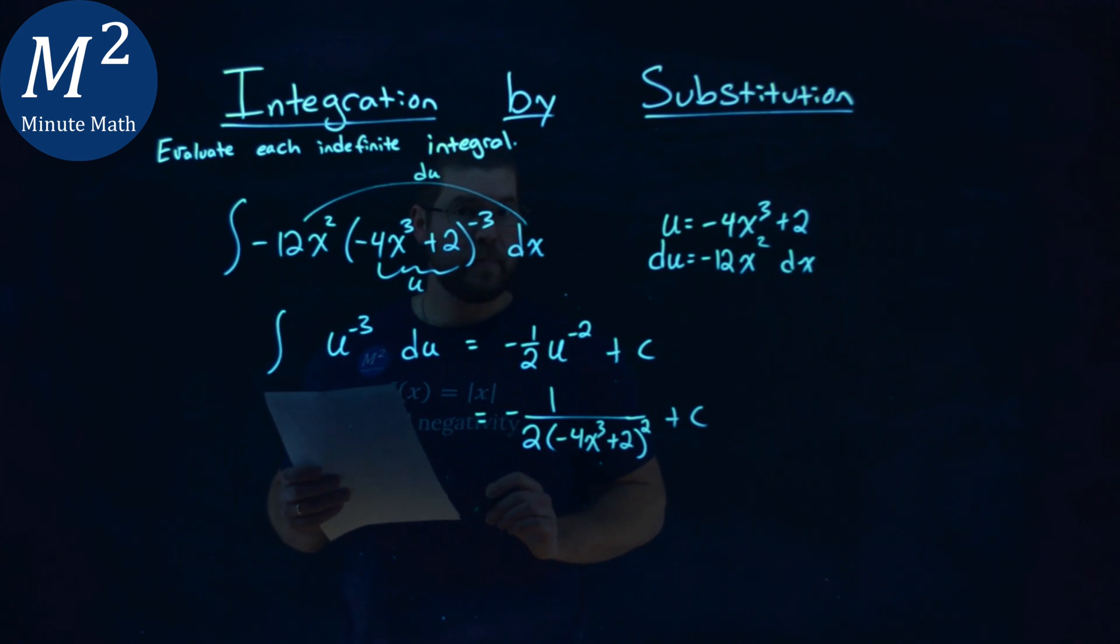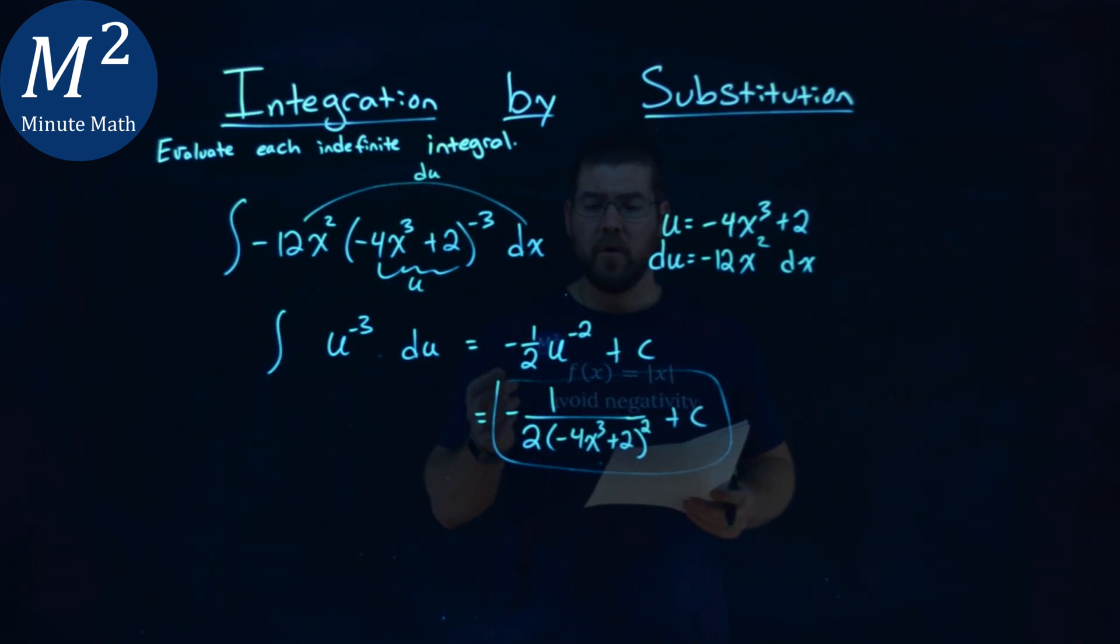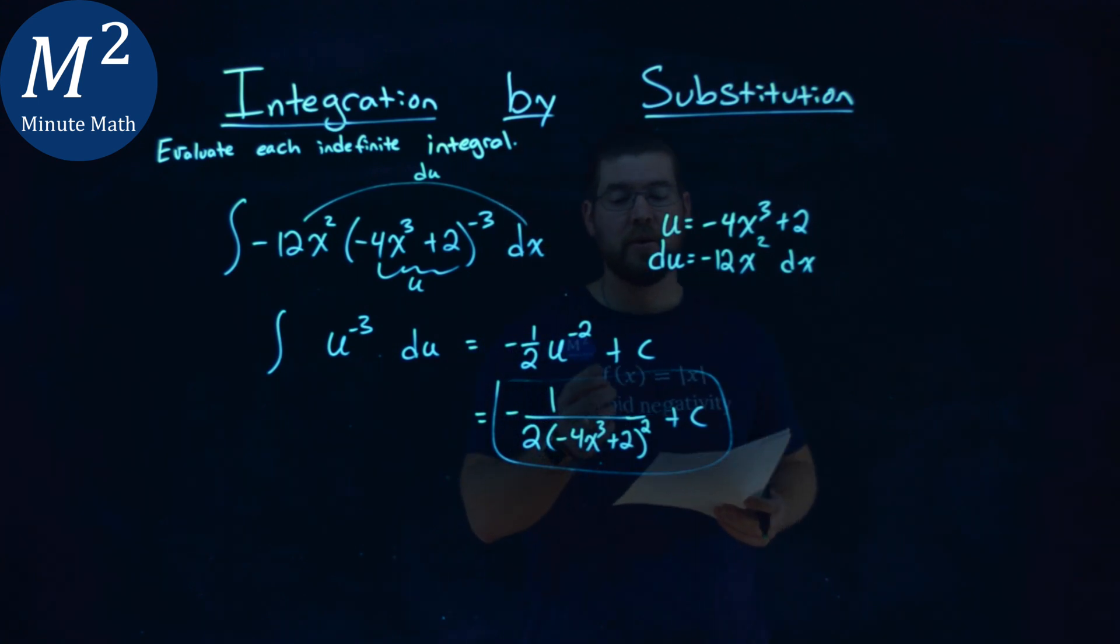Don't forget the plus c, and that's it. My final answer is negative 1 over 2 times (negative 4x³ plus 2)² plus c.